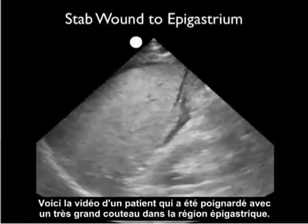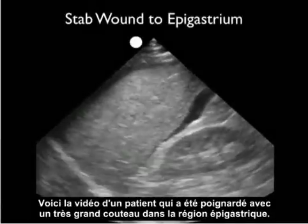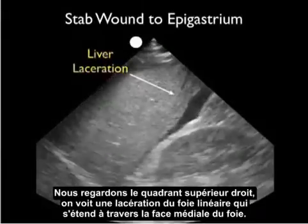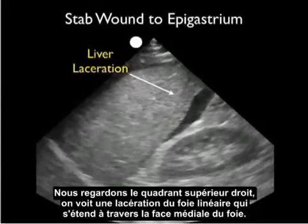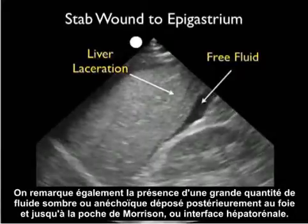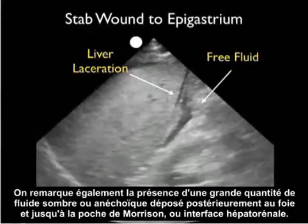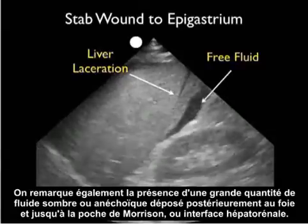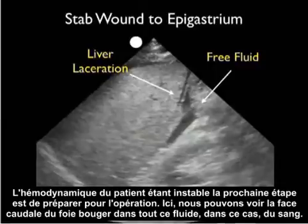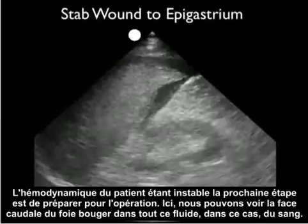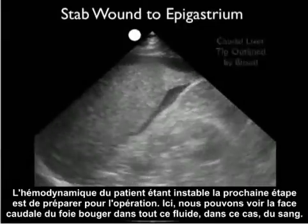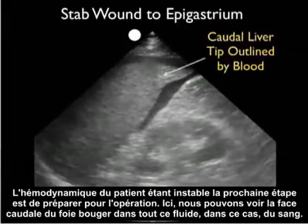Here's a video clip from a patient who was stabbed with a large knife to the epigastric region. As we look at the right upper quadrant, we can see a linear liver laceration extending through the medial aspect of the liver. We also appreciate a large amount of fresh fluid — that dark or anechoic fluid collection — layering out posteriorly to the liver and extending into Morrison's pouch, the hepatorenal interface. As this patient had unstable hemodynamics, the next move was to package for the operating room. We can see the caudal tip of the liver waving around in all the fresh blood.